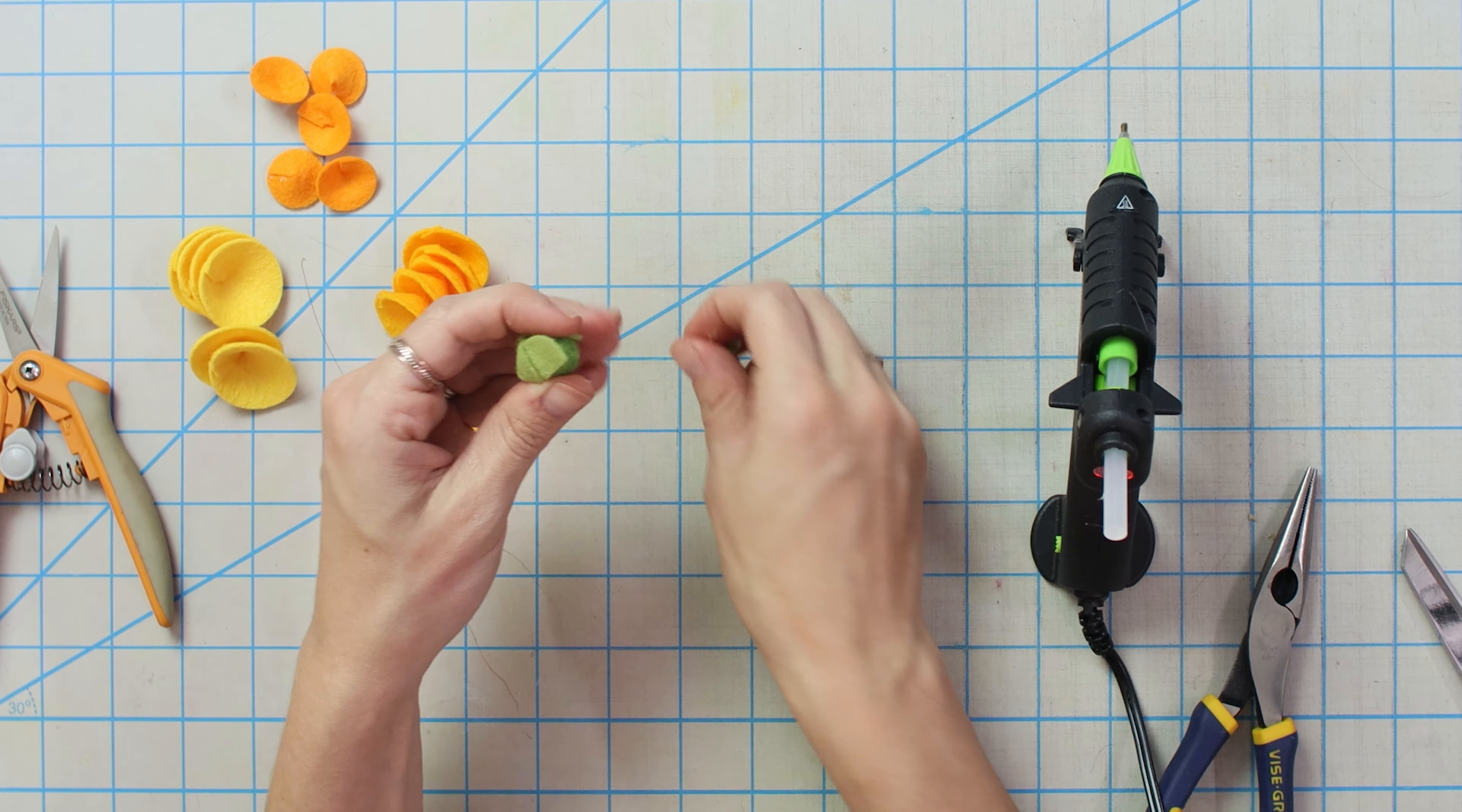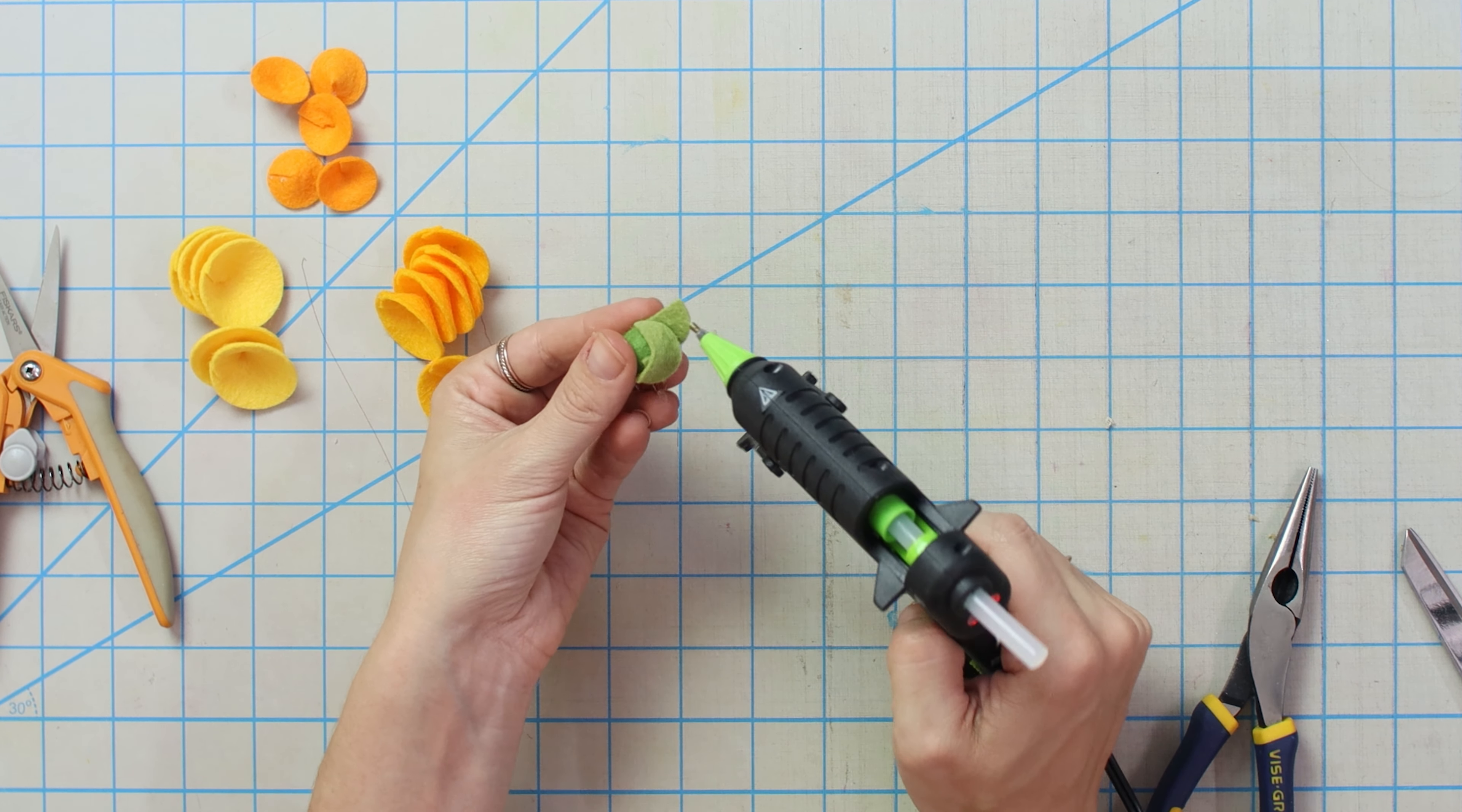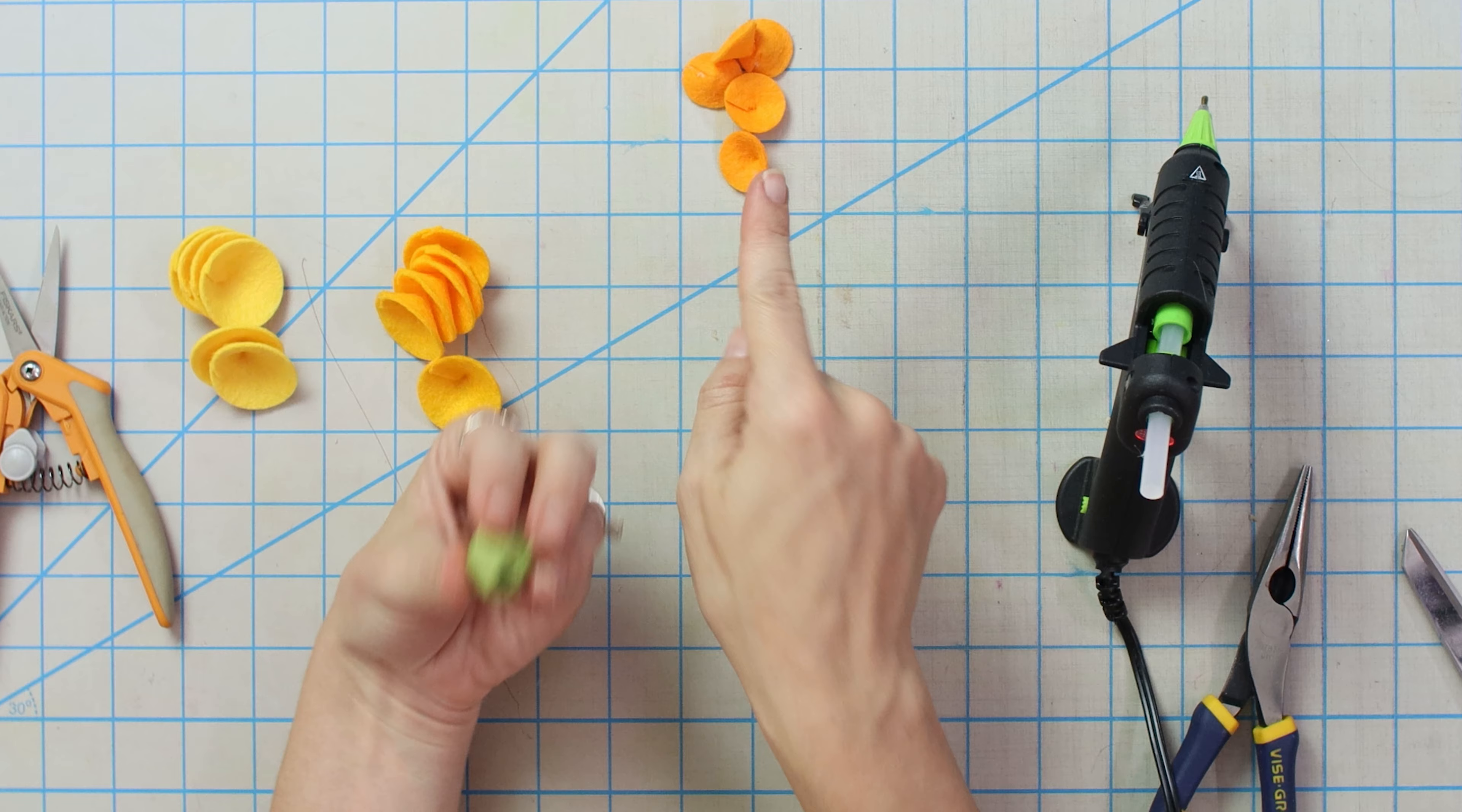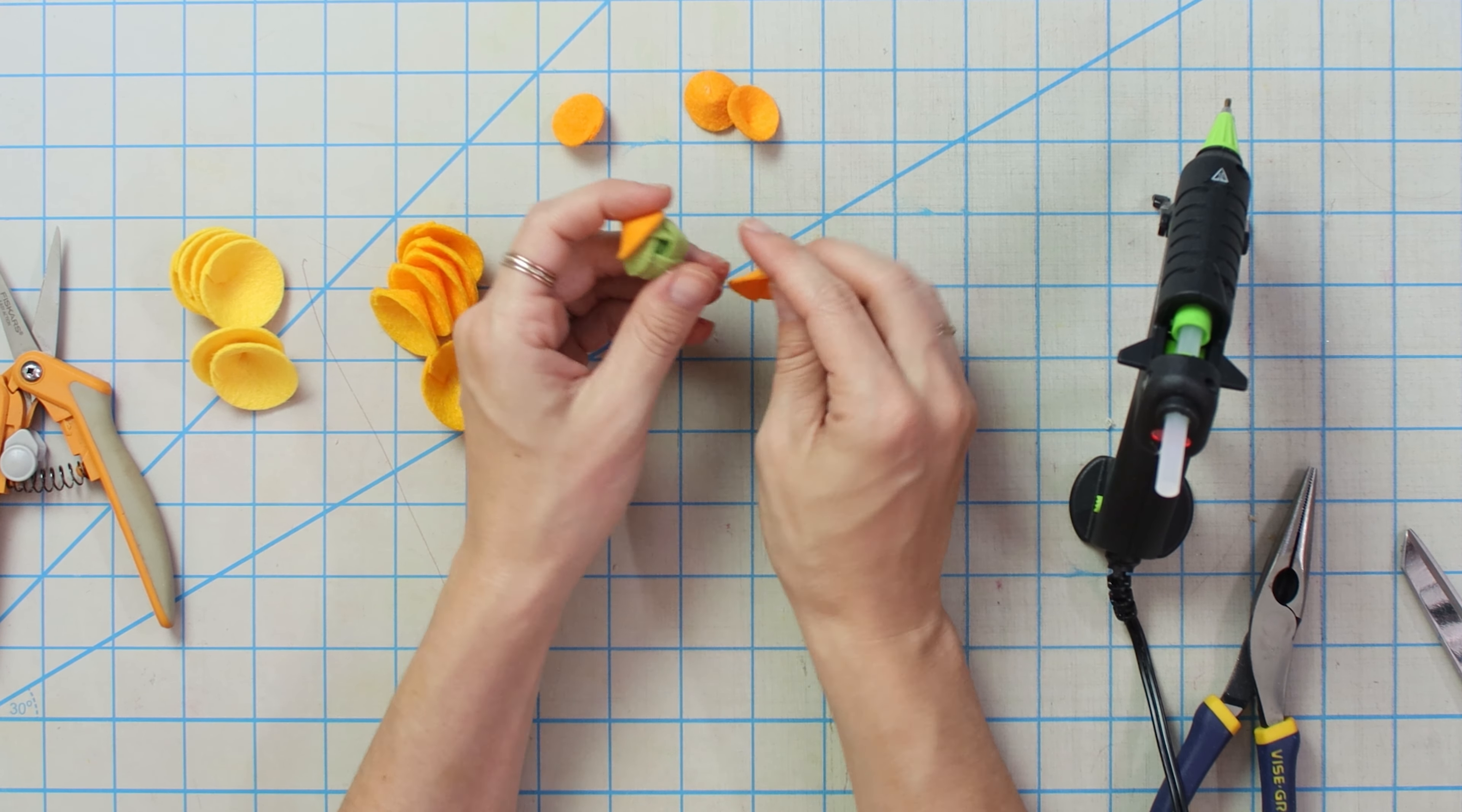This is going to overlap on the glued side. And then we'll go around again. Last petal. And then on our flap that was open, we're going to put glue in and kind of like close the circle.